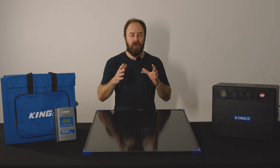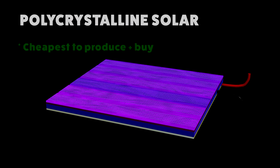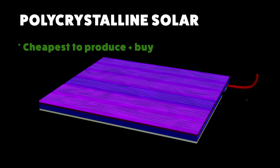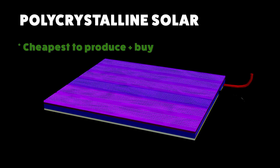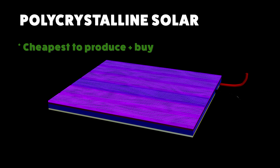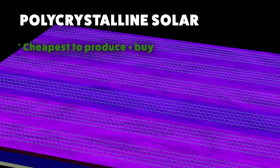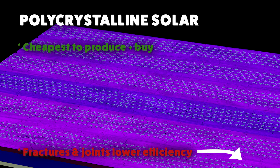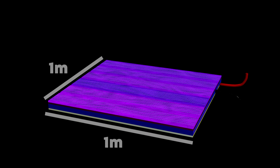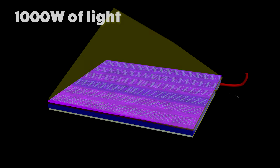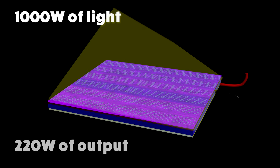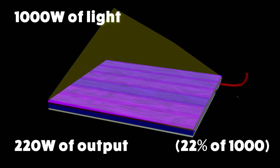Polycrystalline solar is the cheapest to produce and therefore the cheapest for consumers to buy. It's actually made by pouring molten silicon into a mold, but as the cell cools at different rates you end up with cracks, joints, and fractures that lead to inefficiencies. Overall they're about 22 percent efficient, so a one meter square solar panel with 1,000 watts of light hitting it would get about 220 watts of output.